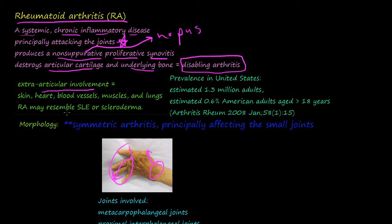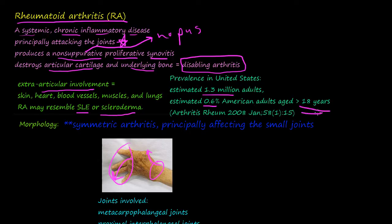RA may resemble SLE, systemic lupus erythematosus — watch the previous videos to know what that disease is — and it can also resemble scleroderma, which we'll talk about in the next few videos. The prevalence of rheumatoid arthritis is estimated at 1.3 million adults in the United States, estimated at 0.06% of American adults aged over 18.